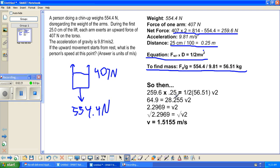Then, we have the kinetic energy formula, which is one-half mass, which is 56.51 kilograms, times v squared.